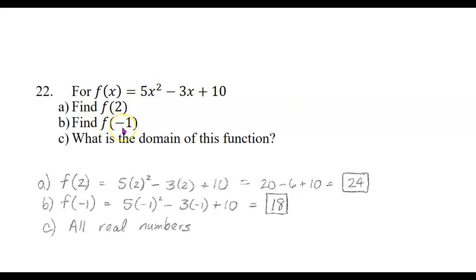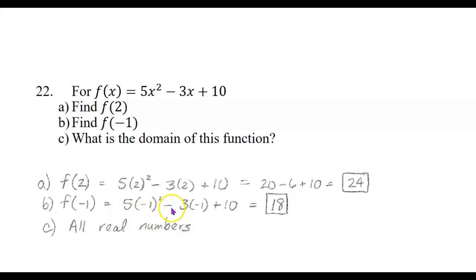Then to find f of negative 1, here we're plugging negative 1 in for x. So 5 times negative 1 squared minus 3 times negative 1 plus 10. Again, square before you multiply: negative 1 squared is positive 1, and 5 times 1 is 5. Minus negative 3 — well, 5 minus negative 3 is the same as 5 plus positive 3, that's 8. And then 8 plus 10 is 18.